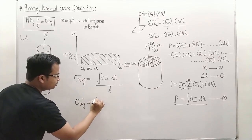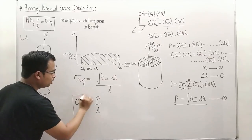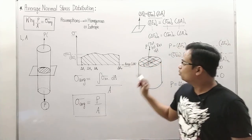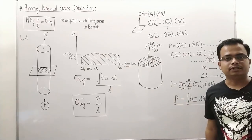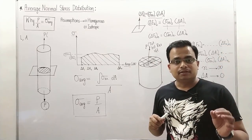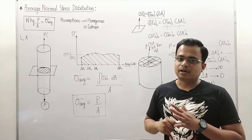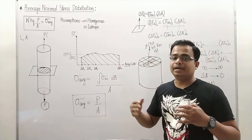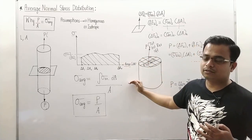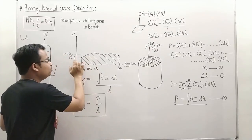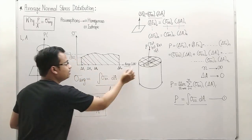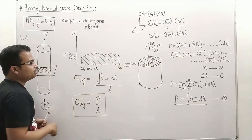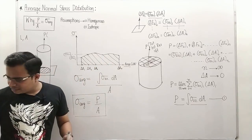And that is why P by A is nothing but the averaged value of normal stress over the entire cross-section. I encourage you all to read about calculating the average value of a continuous function using calculus — once that is done, you will be able to understand this in a much more intuitive manner. This is pure calculus.